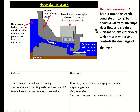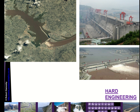There are lots of positives: it controls river flow and hence flooding, it can be used as a source of drinking water, and it can generate hydroelectric power (HEP). The reservoir might also be used as a tourist attraction, like Kielder Water in Northumberland. The negatives are that it floods large areas of land, damaging habitats and displacing people, it's very expensive, and it damages river processes, particularly the deposition of sediment.